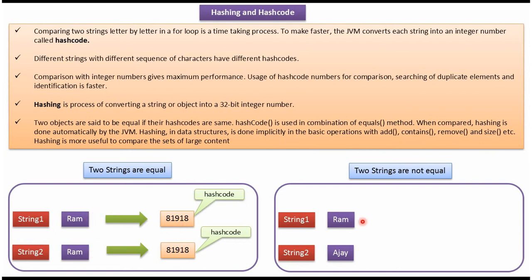Here you can see two different strings, ROM and AJI. JVM will convert to hashcode. You can see the hashcode values are different. So these two strings are not equal.